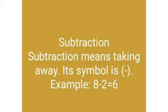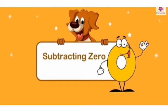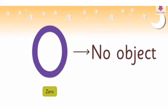Example: 8 minus 2 equals 6. Students, here you can see 8 and 2 are different numbers. When we subtract these values we will get 6. Firstly, students, we will learn about subtracting 0. As you know, 0 means no object.